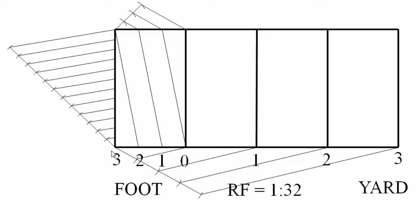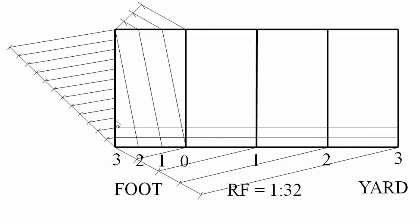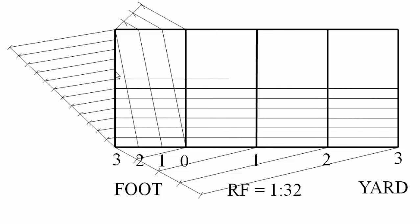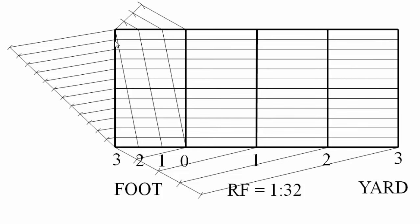Set the drafter horizontally and bring it to each marked point, drawing horizontal lines across. This shows how the vertical line has been divided into 12 equal parts. From this point to this point represents 12 inches — that is one foot.